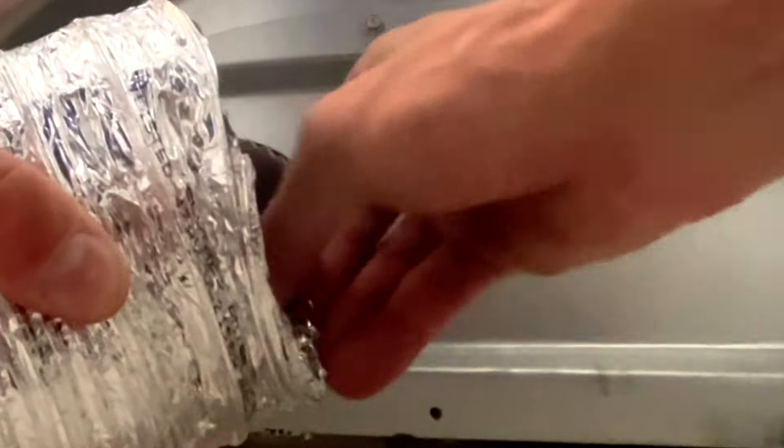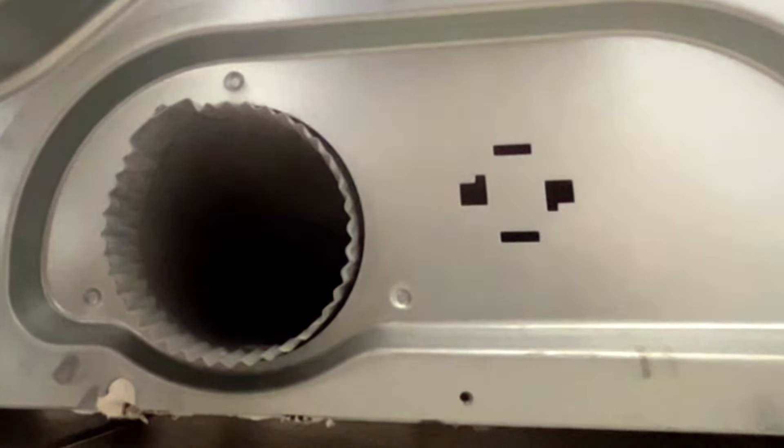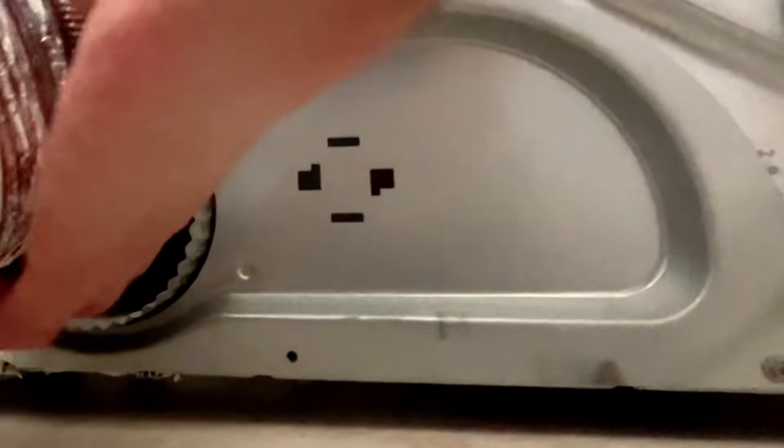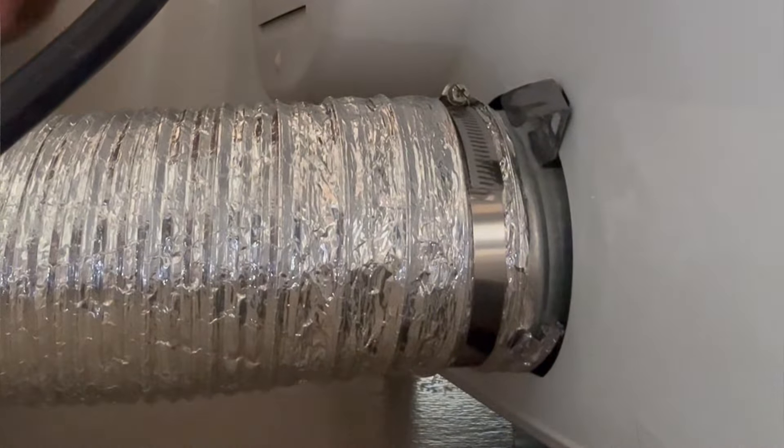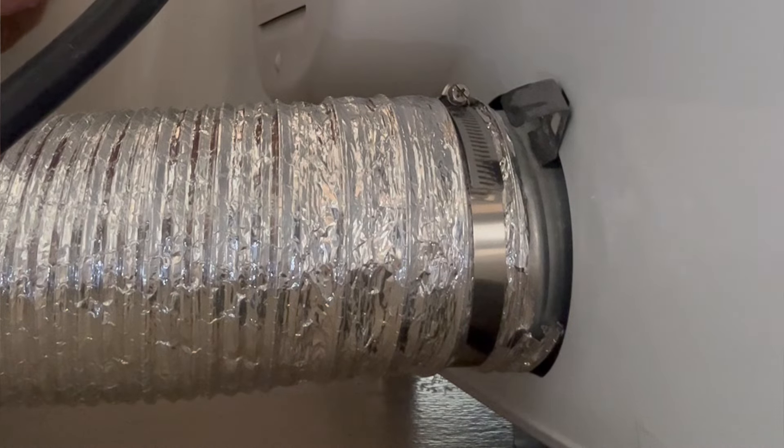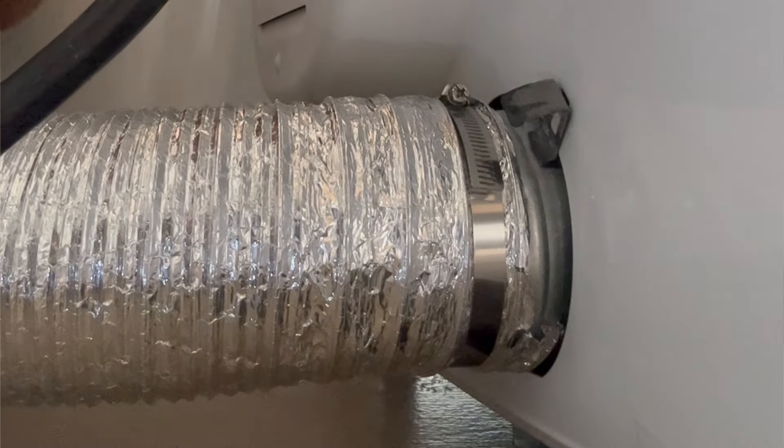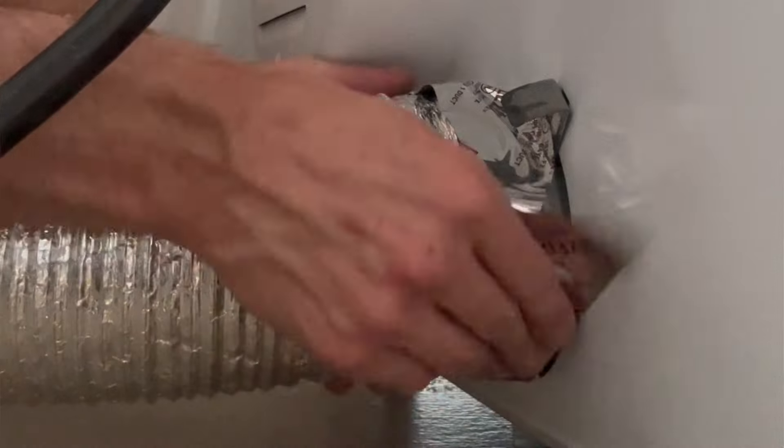Again, we're gonna do the same thing that we did on the other side, and that is to straighten it out with our fingers to make sure that it is nice and flat so it fits on there good. We're using the same clamp again, and now we are going to repeat the process. We're gonna put it on there, make sure it's on there nice and good. Again, this part is sharp, so make sure you don't cut yourself and make sure you don't rip the vent.